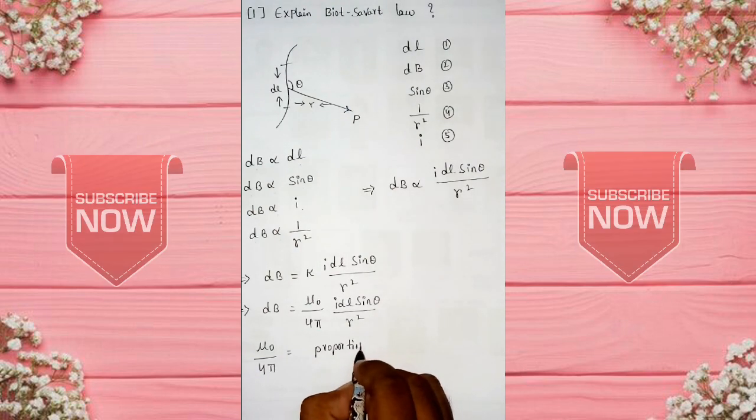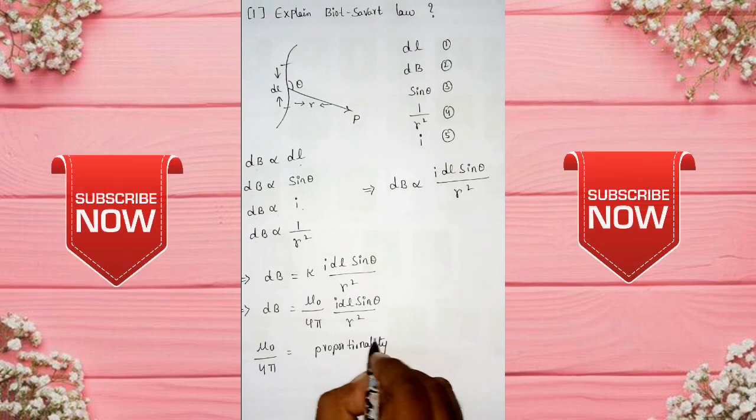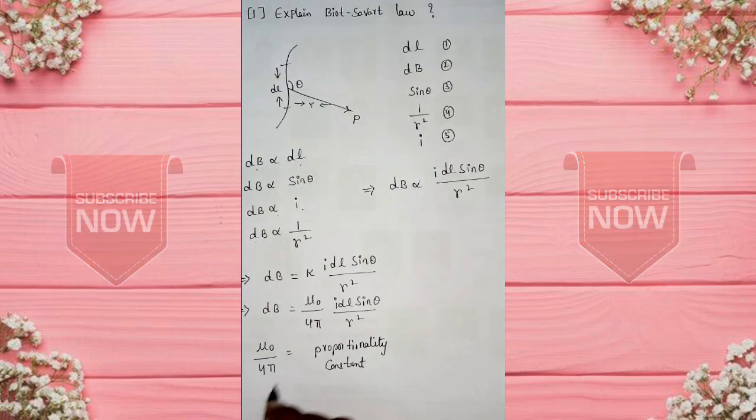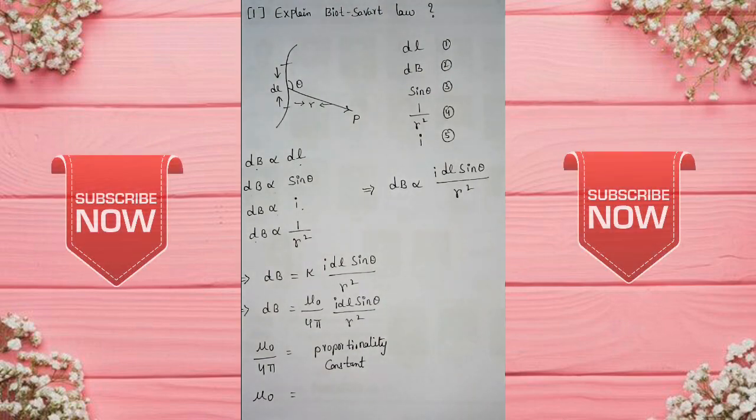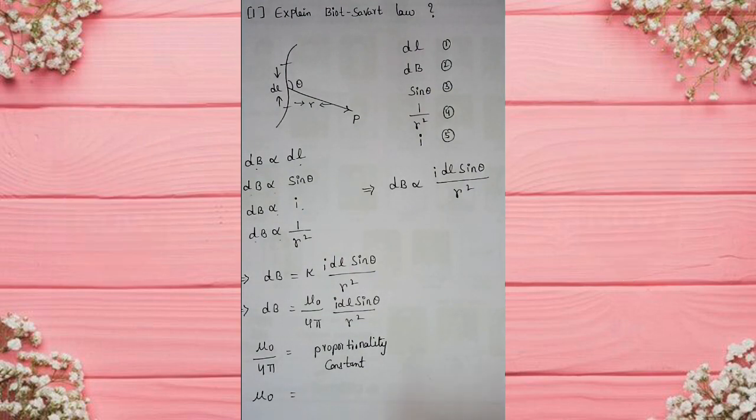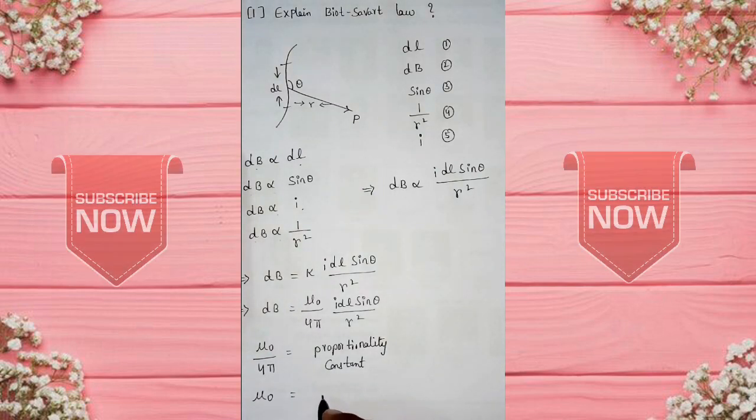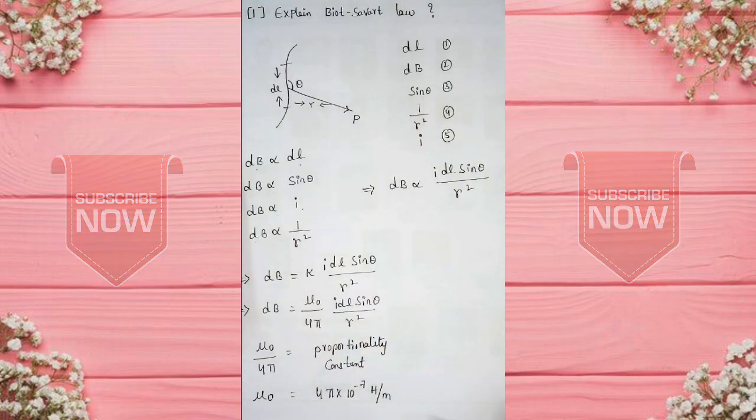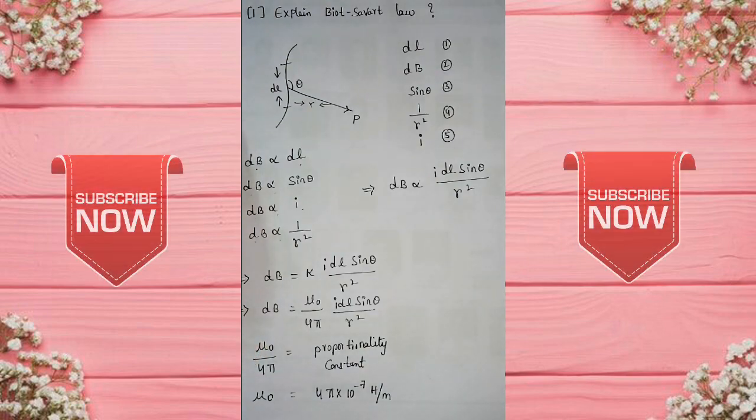Easy derivation, proportionality constant. Next, mu0 value, mu0 kii value on the magnetic permeability. Adhe vedang, mu0 kii value on the 4 pi into 10 to the power of minus 7 hertz per meter. Adhe vedang, mu0 is the magnetic permeability.